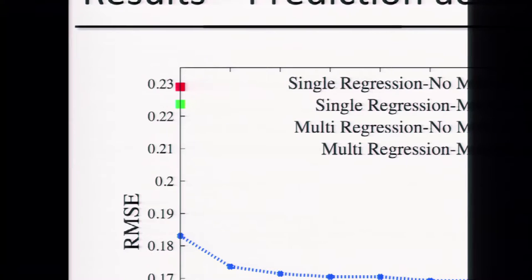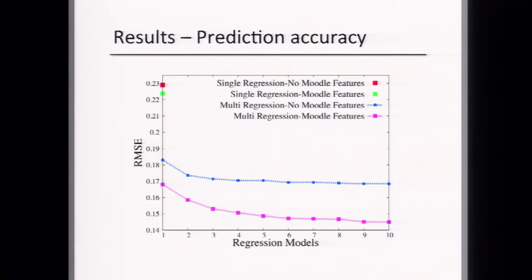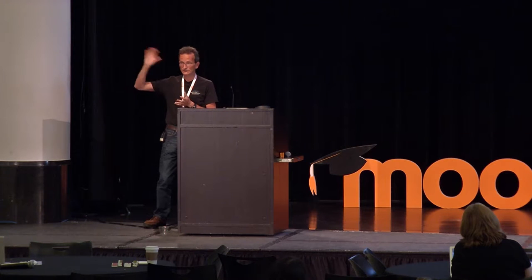When we switch to the more sophisticated collaborative multi-regression model, performance improves as we increase the number of regression models — the size of the W matrix. At some point the gains diminish. Again, the same pattern holds: using Moodle features versus not yields a significant benefit. The magenta line is the best performance we get — the multi-regression model using both standard features and features extracted from student interaction with the Moodle site.